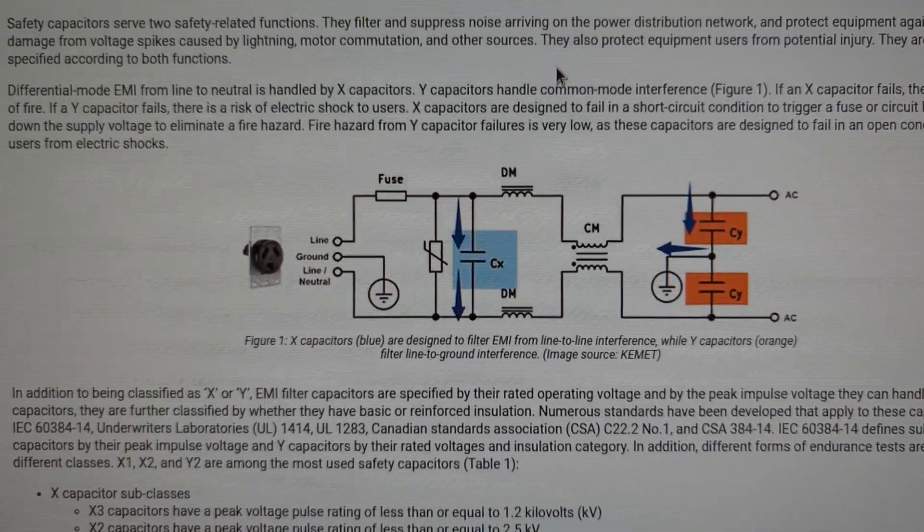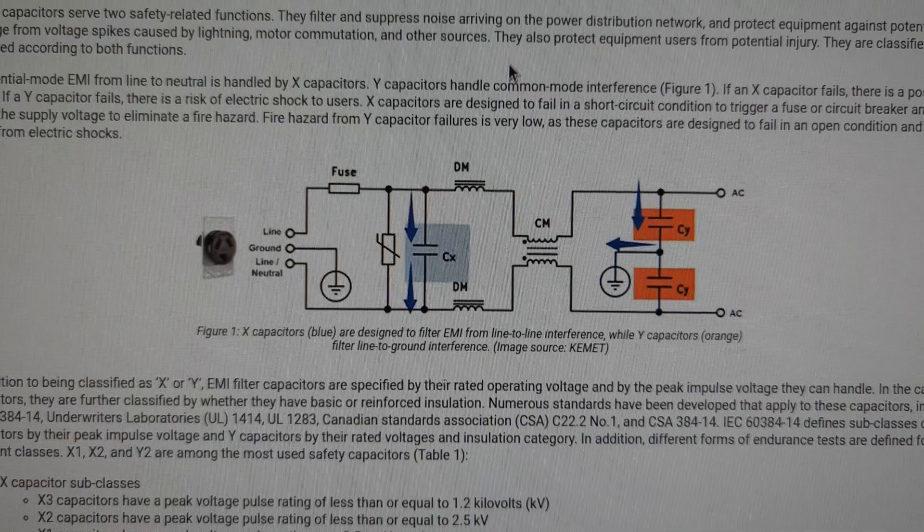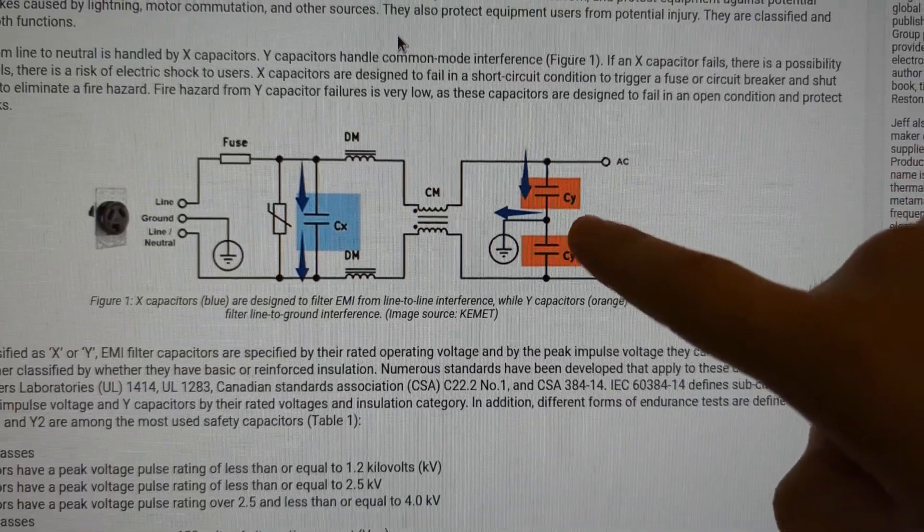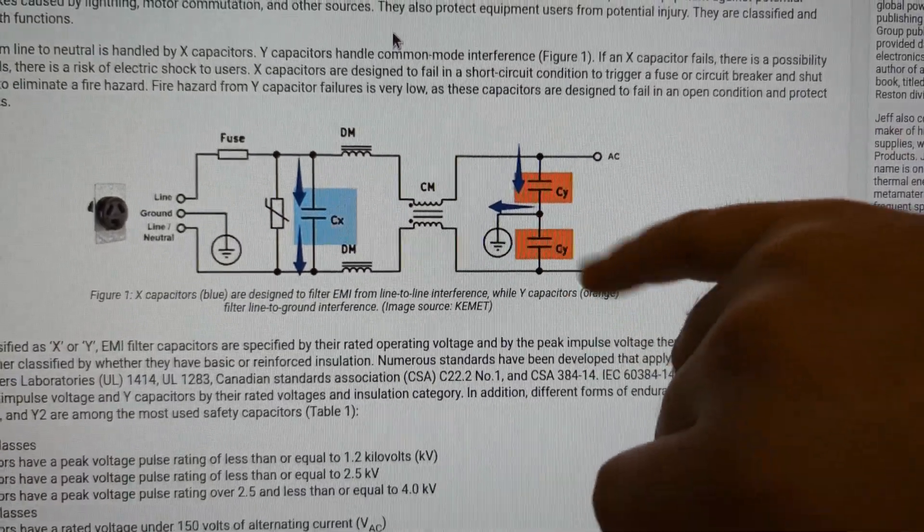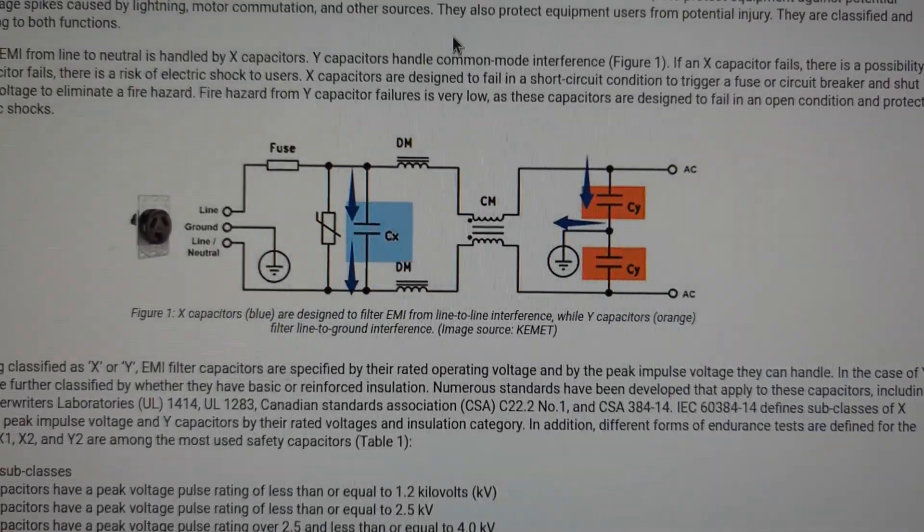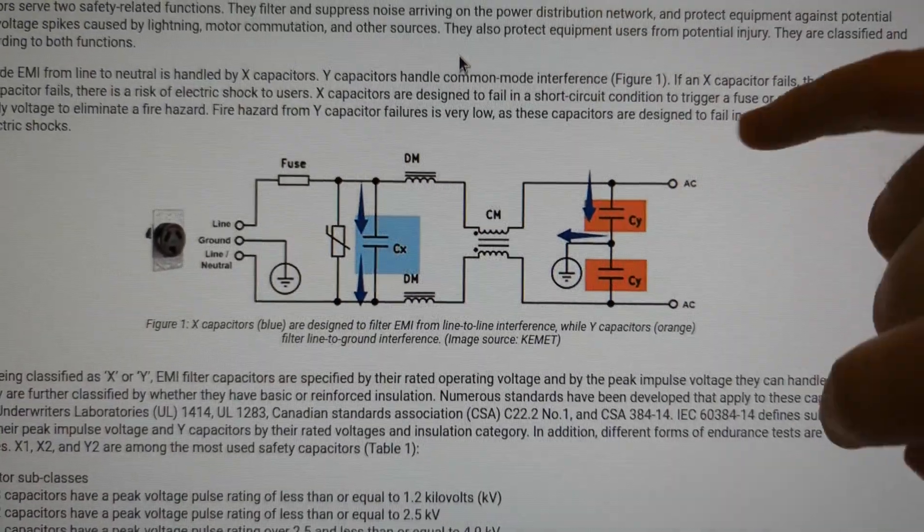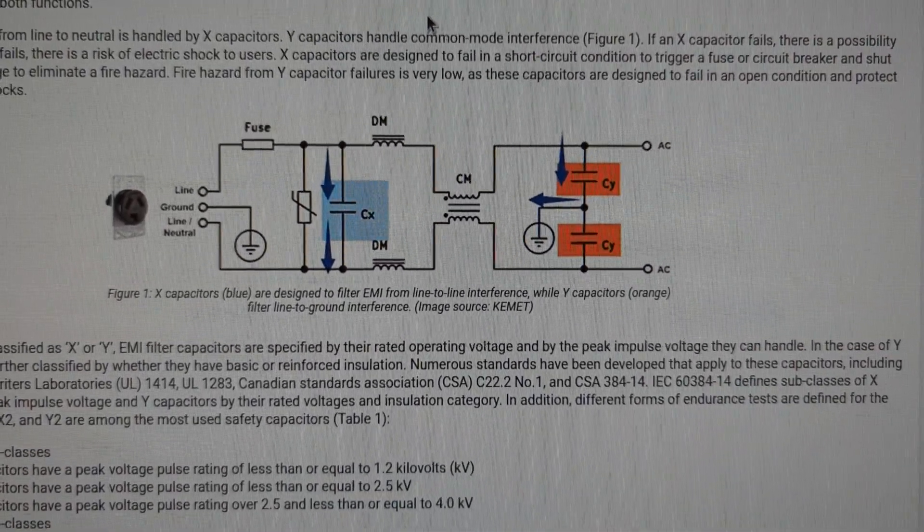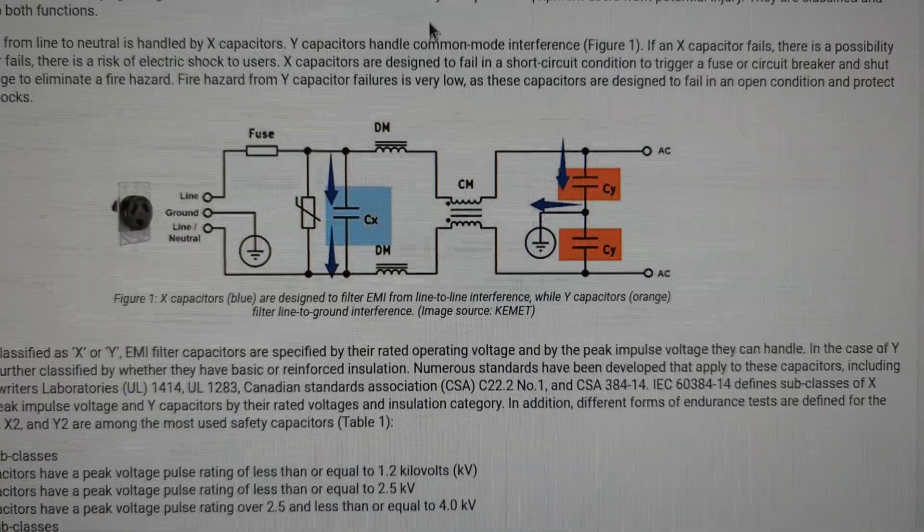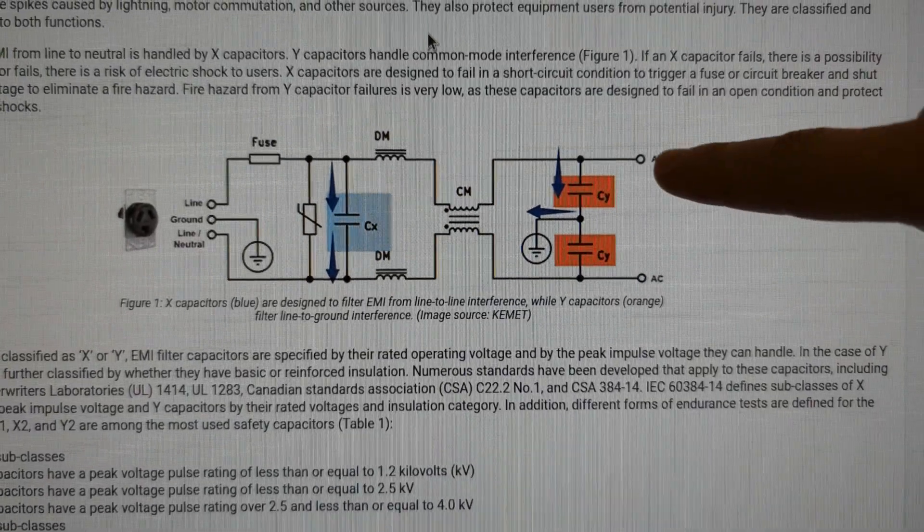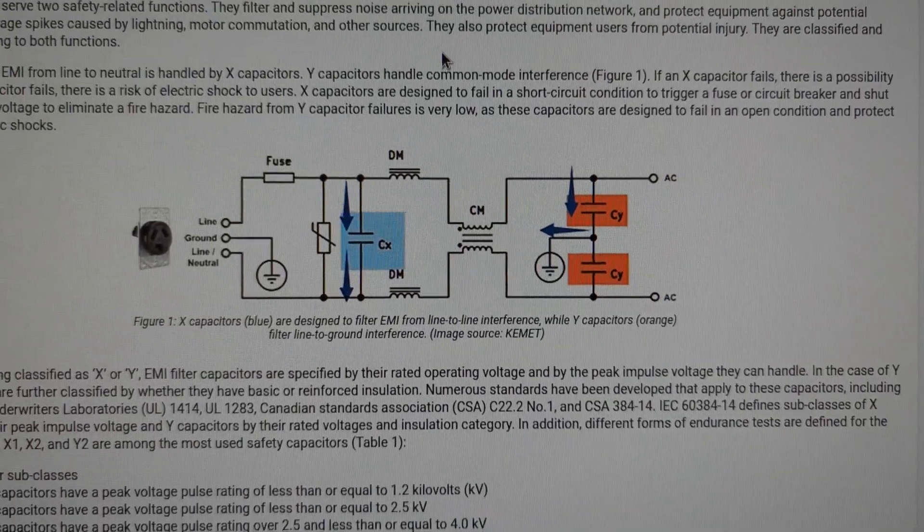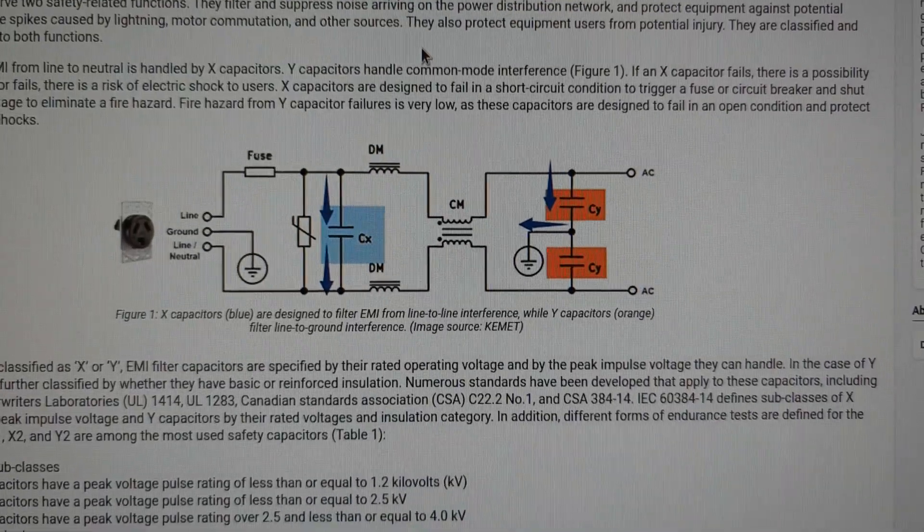However, even more critical is the type of capacitors that you use for the other position in the circuit, which is right here between live and ground or neutral to ground. And that's because the short circuit between these two points in case of failure of a capacitor could lead to electrocution.